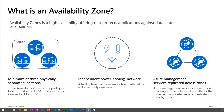Each of these Availability Zones has completely separate power, cooling, and networking, allowing for if there's any issue in one Availability Zone, this to be not affected in the other Availability Zones within the same region.